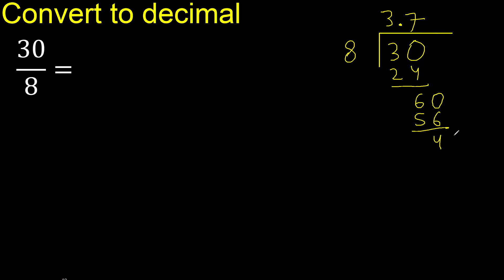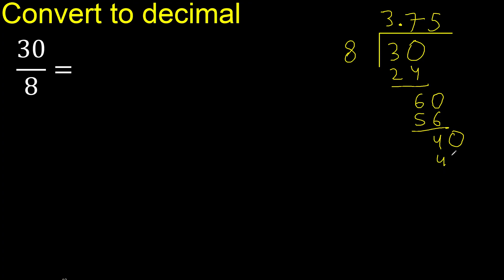Complete — always complete with 0. Point is here. 40. 8 multiplied by 5 is 40. 40 minus 40 is 0. Therefore, finish.